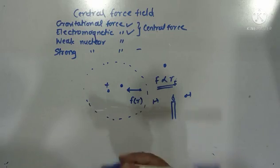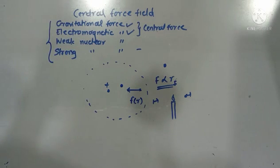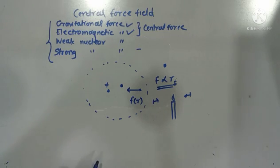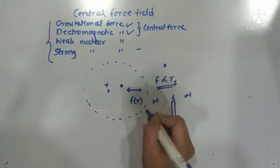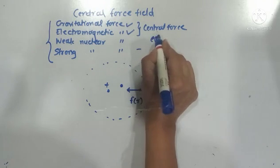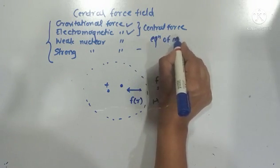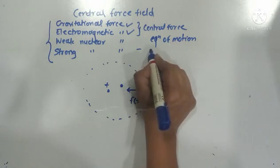Such types of forces are called central forces. We deal with central forces because out of the four fundamental forces in physics, gravitational force, electromagnetic force, and in some cases strong nuclear force are central force fields. In this unit, we are going to deal with the equations of motion for the central force field and the equation of the orbit.